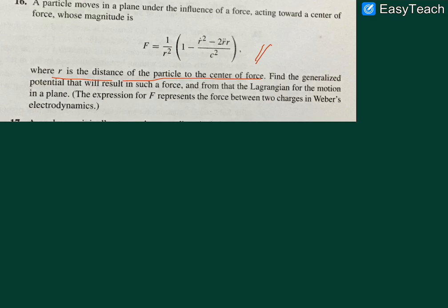Let's just directly jump to the solution part. We'll separate all the terms: r dot square upon c square by r square plus two r double dot upon c square r. That's the force that we are given.